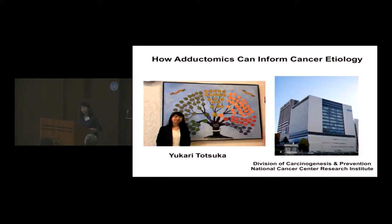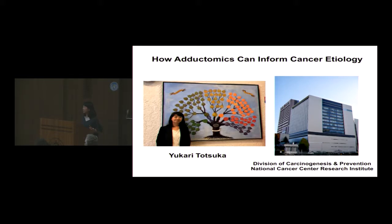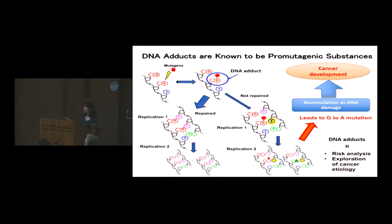Good afternoon everybody. My name is Yukari Totsuka and I'm from the National Cancer Center Research Institute in Tokyo, Japan. It's an honor to speak here today, and I'd like to thank the organizer for this opportunity. Today's title is: how adductomics can inform cancer etiology.